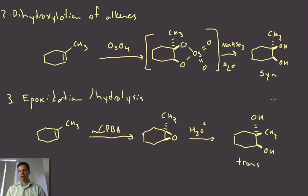Whereas the dihydroxylation gave the syn relationship. So those are three different ways or three different categories of chemistry that you learned about how to get to alcohols from alkenes.